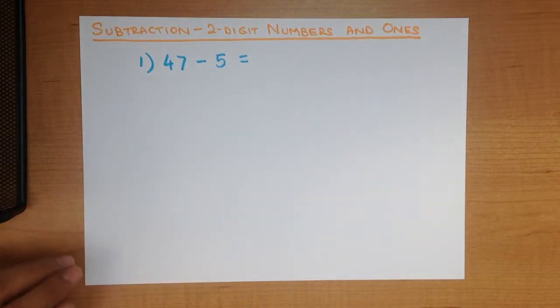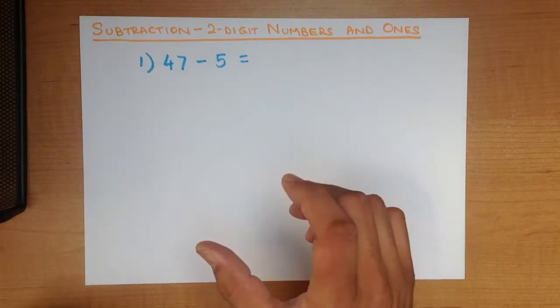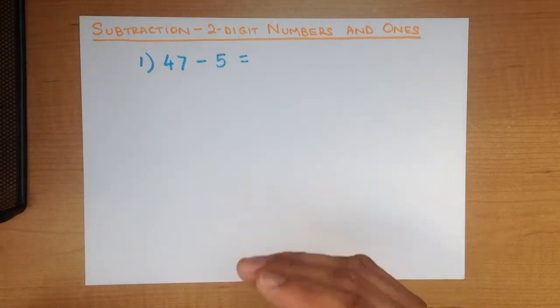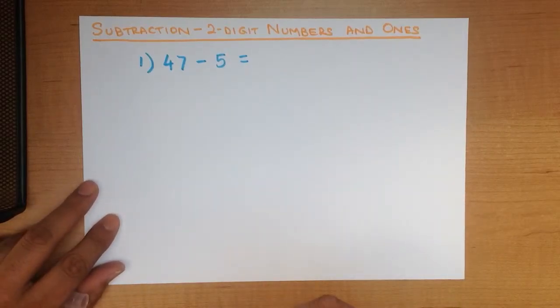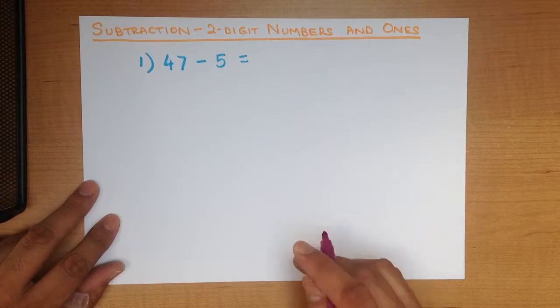Now you can do this using the dot method and the head and fingers method, but we are going to do this using the vertical method so that you can get accustomed to doing this, which will help when you are subtracting larger numbers.